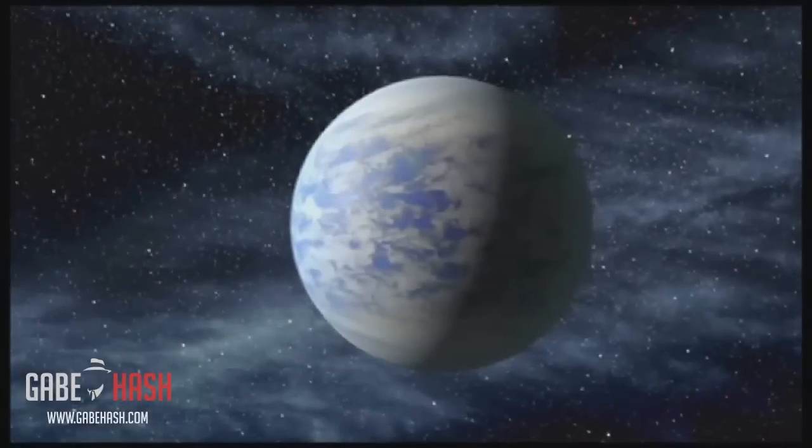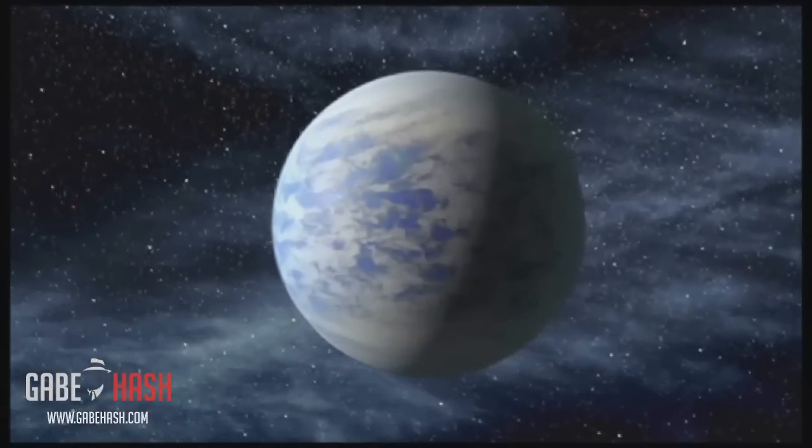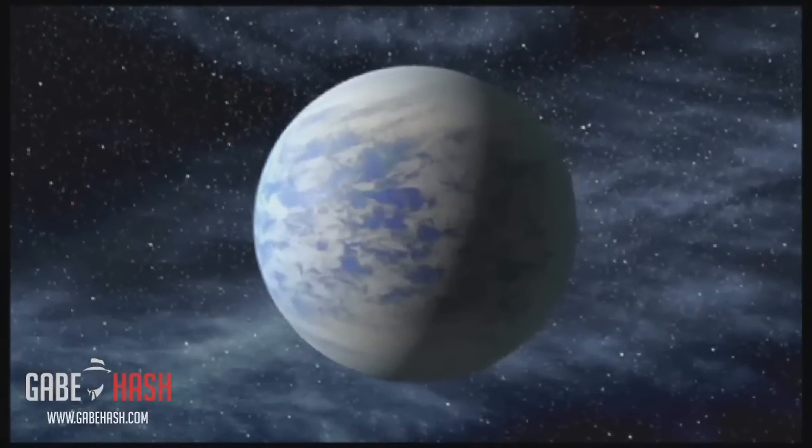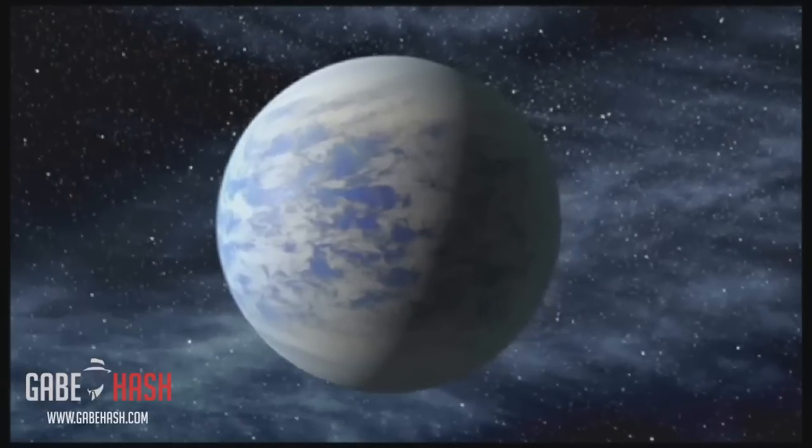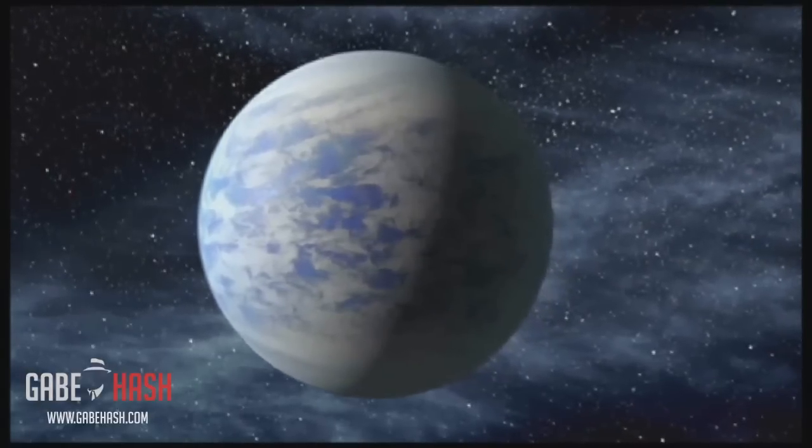The outer planet, Kepler-69c, is about 70% larger than Earth and orbits every 242 days. It is the smallest planet found in the habitable zone of a Sun-like star.